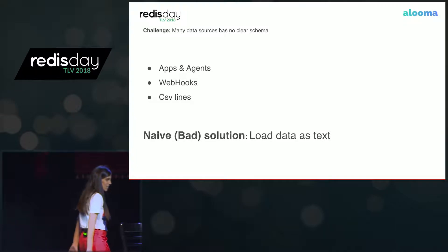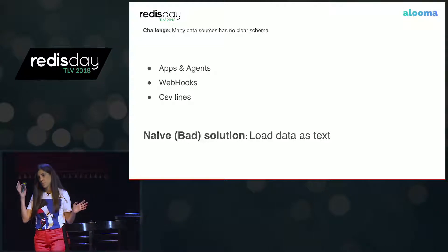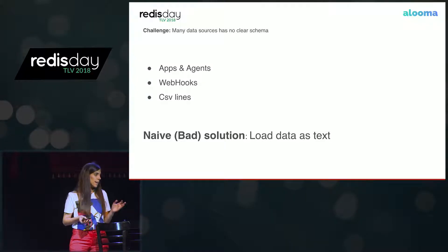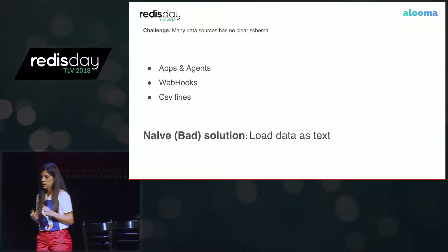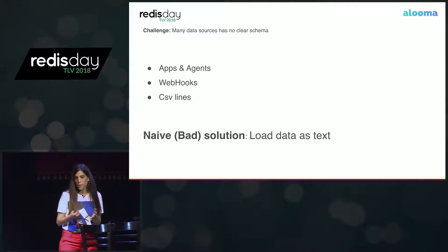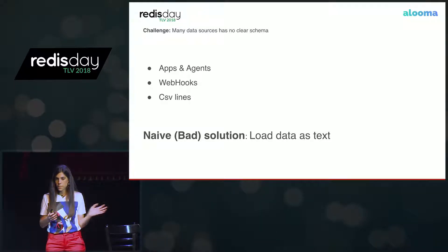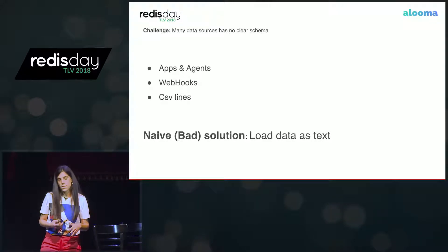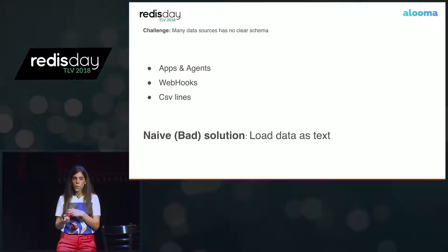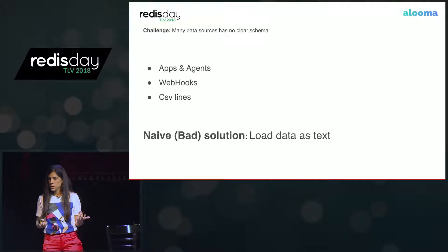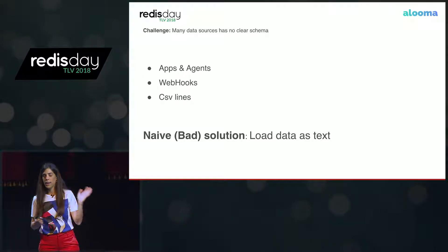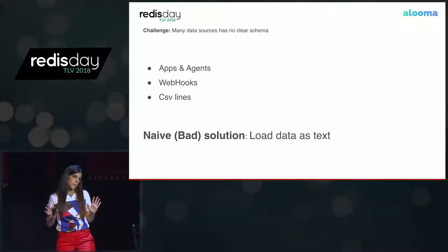So today we are going to focus on what we do when we want to copy a source that has no schema — like some app data, clickstream, webhooks. One naive solution, which is obviously not good enough, is to just say if we don't know the type, let's look at it as text. This solution is not good enough because if we want to do analytics on top of our output, we need a more expressive type. If it's integer, we want it to be integer. If it's timestamp, we want it to be timestamp so we can do richer queries and store it more efficiently.